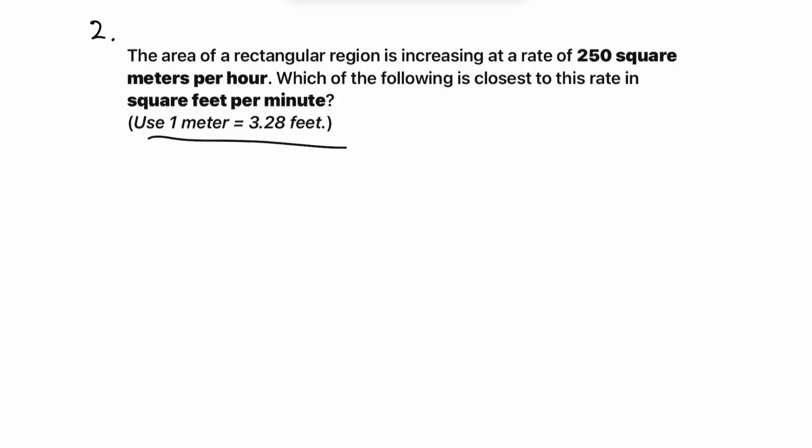Which of the following is the closest to this rate in square feet per minute? The SAT has very generously given us a conversion from meters to feet. 250 square meters per hour, and we need to convert this into square feet per minute. So what this problem is basically saying is we have to convert from meters squared to feet squared and hours to minutes, obviously. And what I would recommend that you do is do it one at a time.